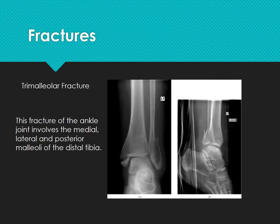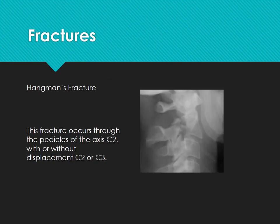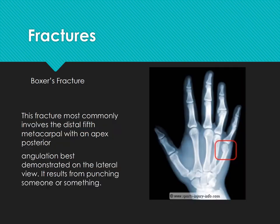Fractures. This is a trimalleolar fracture — a fracture of the ankle joint involving the medial, lateral, and posterior malleoli of the distal tibia. Very common. Hangman fracture: this fracture occurs through the pedicles of the axis at C2, with or without displacement of C2 or C3. Boxer's fracture: this fracture most commonly involves the distal fifth metacarpal and results from someone punching something or someone.